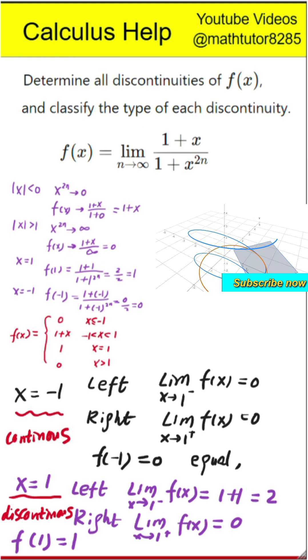Final answer is, the function f of x is discontinuous only at x equals 1, and the type of discontinuity is a jump.